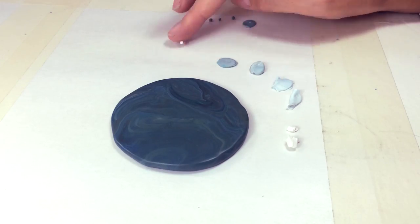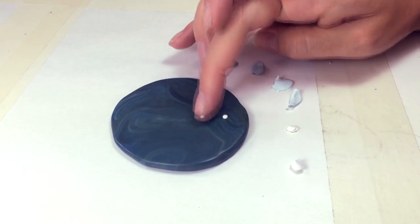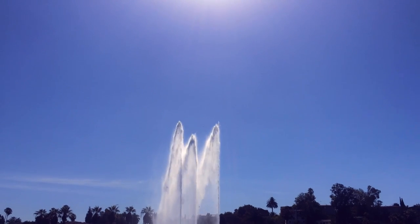Then I roll out three little white balls of clay and place them on the base in a triangle, representing the three spigots of the fountain.